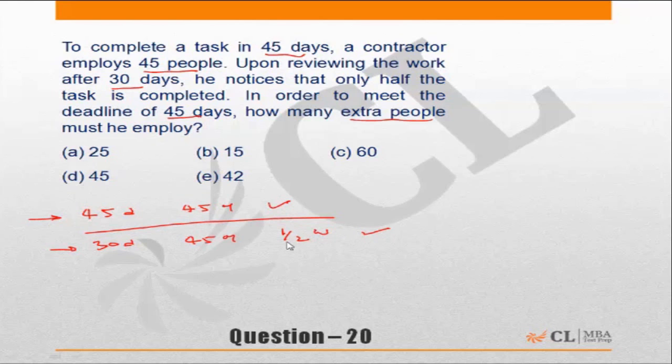He still needs to complete the work in 45 days, so how many days has he got extra? He's got 15 more days. In 15 more days, how much work does he want to do? He needs to finish 50 percent of the work, because in the first 30 days he's done half the work.